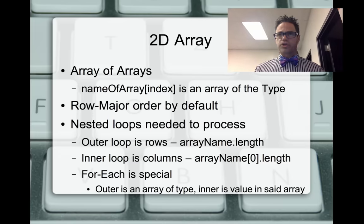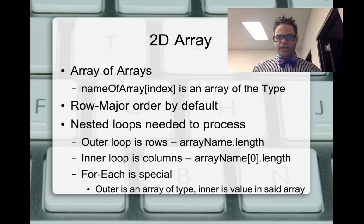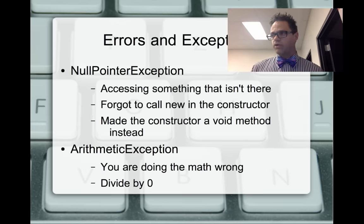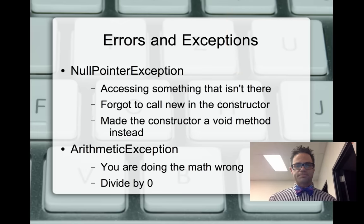A for-each loop on a 2D array is a special case — great to use, but you have to do it right. Remember: with a for-each loop, no modification of the data structure — you cannot add or remove from the structure while iterating.